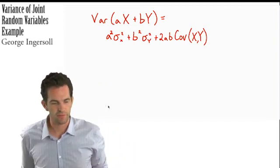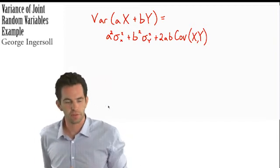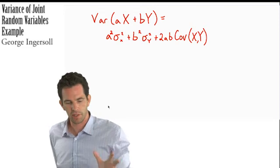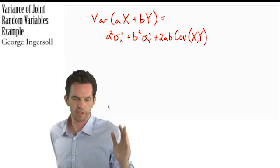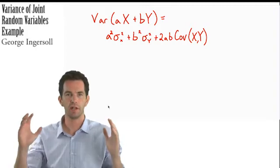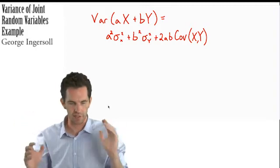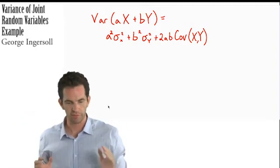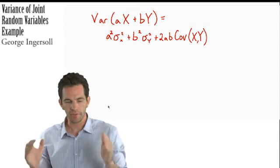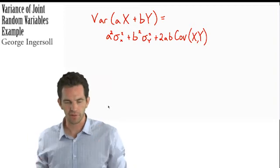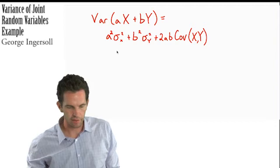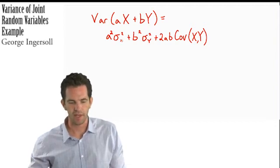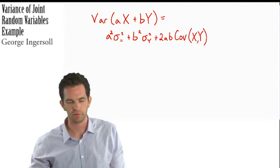It's one of the big equations having to do with joint random variables. What it says is the variance of some quantity of x plus some quantity of y — x and y being the random variables — the variance of those two added together is equal to a squared times the variance of x.